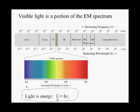Which means that blue light has higher energy and higher frequency, and red light has lower energy and lower frequency.